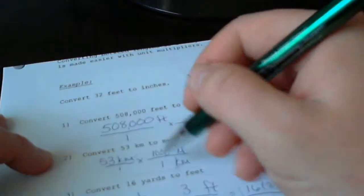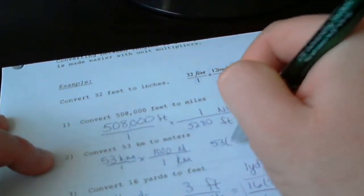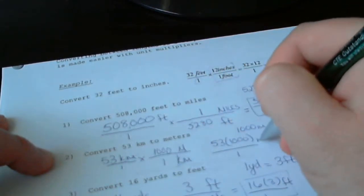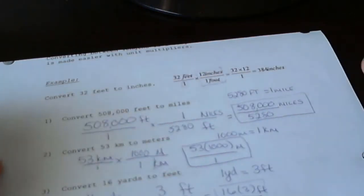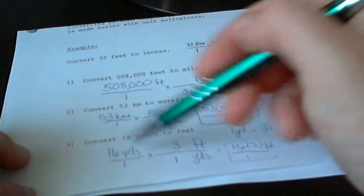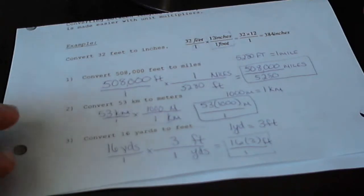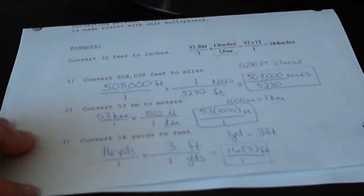I guess we should go back and clean up number 2. We should multiply across the top here: 53 times 1,000 over 1, and that's meters. If there was any part of this lesson that you found confusing, maybe especially the unit analysis part, go ahead and go back and watch it again, just to make sure you got all the details. We will start with more conversions in class.